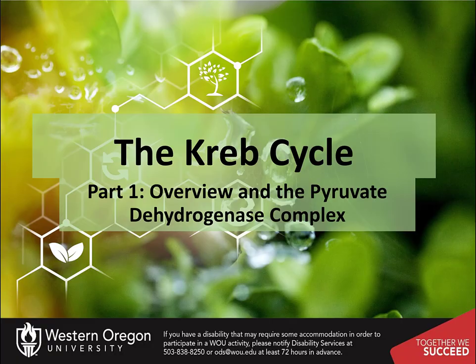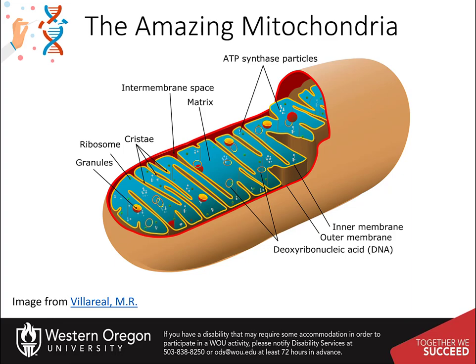Welcome to part one of our lecture series on the Krebs cycle. This tutorial will give you an overview of the Krebs cycle process and focus on the pyruvate dehydrogenase reaction that generates the acetyl-CoA required for entry into the Krebs cycle. Following the completion of glycolysis, pyruvate will move into the matrix of the mitochondria during aerobic respiration, and will then be converted to acetyl-CoA, which can enter into the reactions of the Krebs cycle, also called the citric acid cycle or tricarboxylic acid cycle.